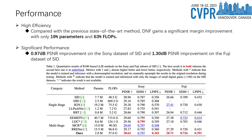Regarding performance, our DNF framework demonstrates remarkable efficiency. It achieves significant performance improvements with only 19% of the parameters and 63% of the FLOPs compared to the previous state-of-the-art method. This efficiency does not compromise quality — on the contrary, it delivers a 0.97 dB PSNR improvement on the Sony dataset and a 1.3 dB PSNR improvement on the Fuji dataset.